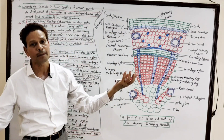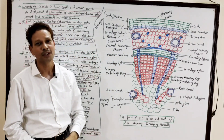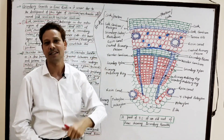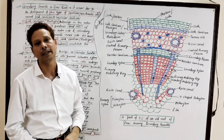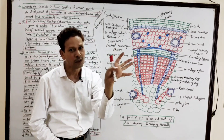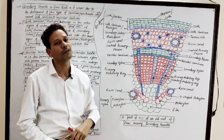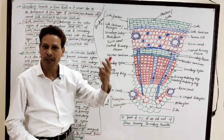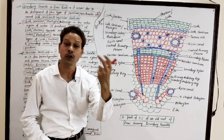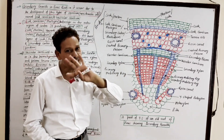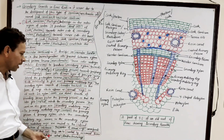In the secondary xylem, large-sized xylem tracheids are present. Note: in Pinus root secondary growth, there are no xylem vessels — for competitive exam students, there are well-developed xylem tracheids only. This vascular cambium, which gives rise to secondary growth of vascular tissue, produces annual rings.